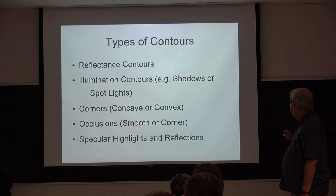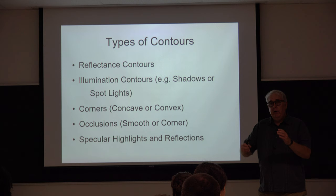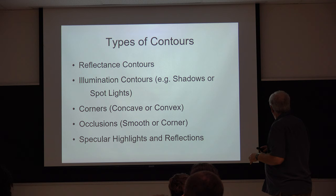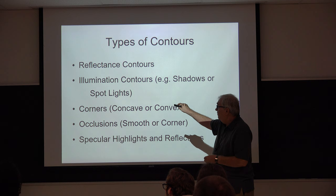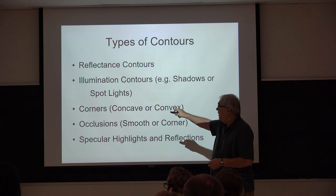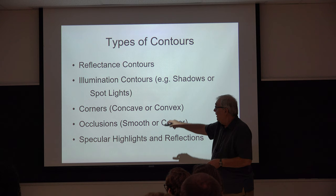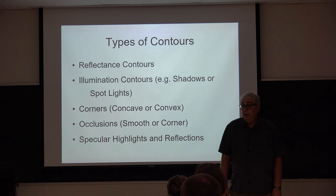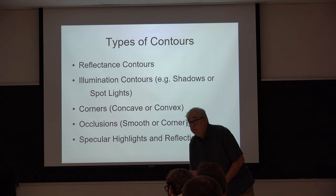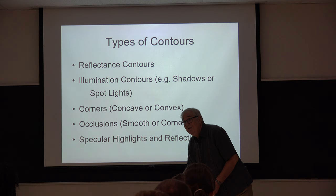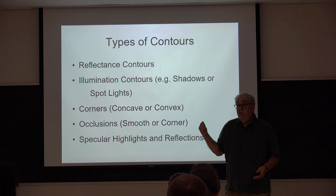We have corners, and corners can be of two types: concave and convex. A corner is an abrupt change in surface orientation. Looking at this corner of the room, one part of the wall faces one way and another part faces toward you — there's a rapid change in orientation along that boundary; that's a concave corner. A convex corner would be the contour at the edge of the table. This is also a reflectance contour because the top of the surface doesn't have the same color as the side — these categories are not mutually exclusive.